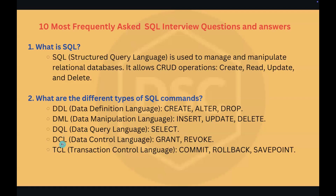The next one is DCL — Data Control Language. DCL commands help us to manage access and permissions. For example, we have GRANT and REVOKE. GRANT is used to give users permission on database objects — for example, GRANT SELECT ON students TO user1 will grant SELECT access to user1. REVOKE removes permissions from the user — whatever access was given using GRANT can be revoked using REVOKE.